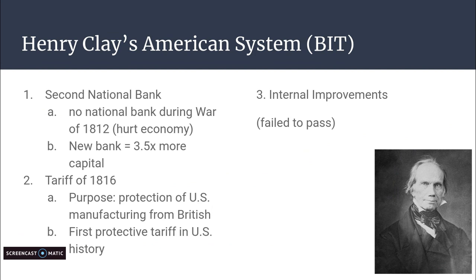The reason why is that some argued it wasn't the federal government's right to make these improvements — that it was a state right. Others argued against it because they were afraid that these new improvements would mean that more people would move west from the north and the south. So this never passed; Congress could never get the internal improvements passed.